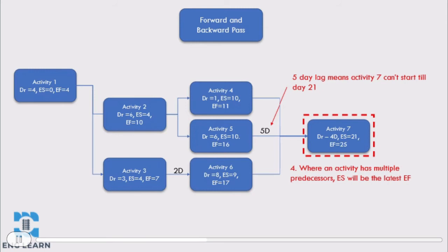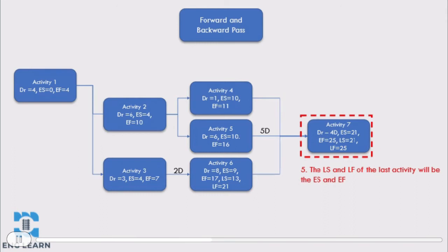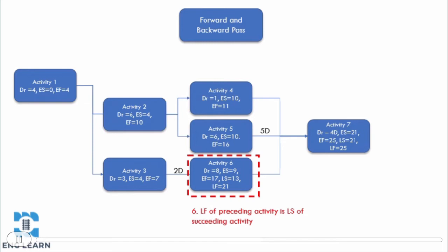This completes the forward pass, and we've now calculated the early start and early finish for each activity. This means we know the earliest any activity could start and finish when there are no delays to any preceding activities. It's now time to complete the backward pass to calculate the late start and late finish for each activity — these are the latest any activity could start and finish before it delays the project. For the last activity, the late start and late finish of activity 7 will be the same as the early start and early finish, since it's the last activity. If it finishes later than the early finish, it will be delaying the project. The late finish of preceding activities is the late start of succeeding activities.